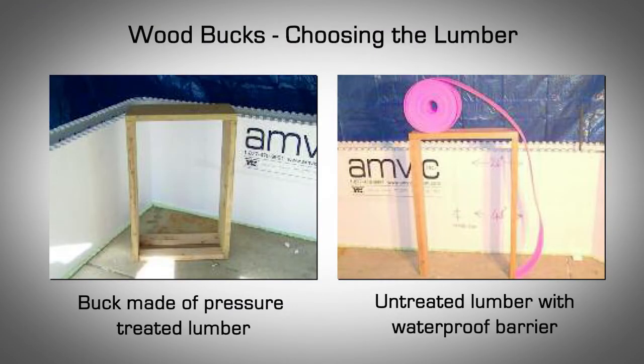Choosing the Lumber: Historically, full dimension pressure treated 2x lumber was used to construct bucks. More recently, builders who still use wood bucks are using untreated wood with a waterproof barrier between the buck and the concrete surface. Untreated wood is available in higher quality, is easier to work with, and the waterproof barrier keeps the buck straighter. In both circumstances, wood bucks will distort and twist to some degree, which can cause window trim and sheetrock installation problems.